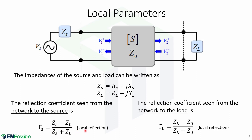Remember that this is local reflection. The reflection coefficient seen from the network to the load is given by Gamma_l, which is equal to Zl minus Z0 over Zl plus Z0. This is also local reflection.